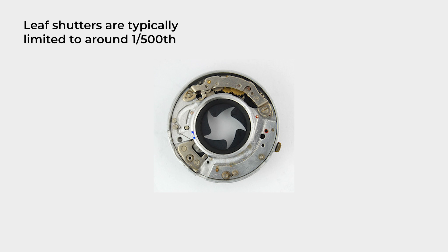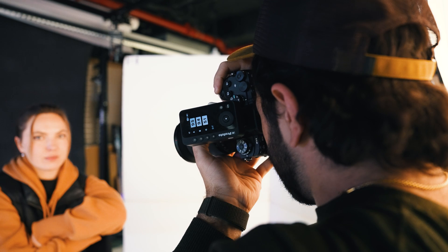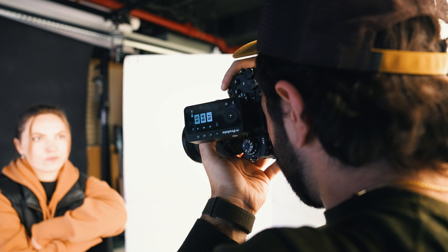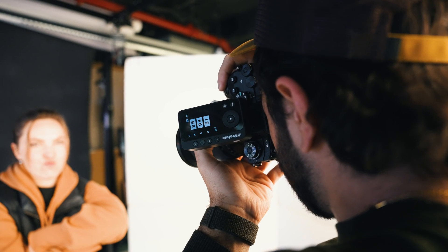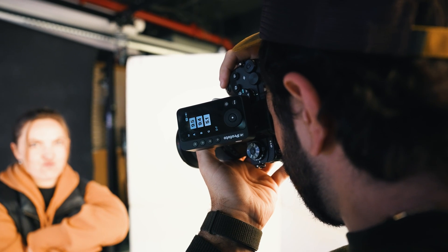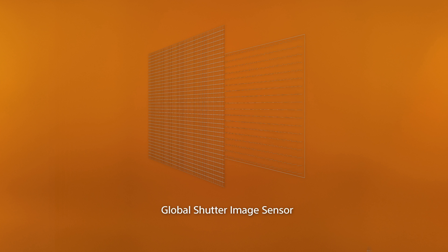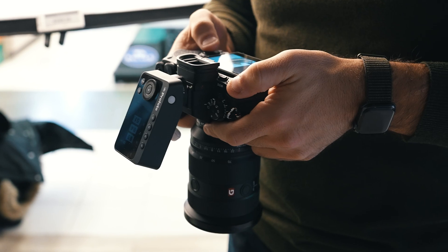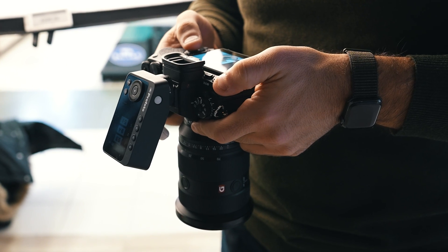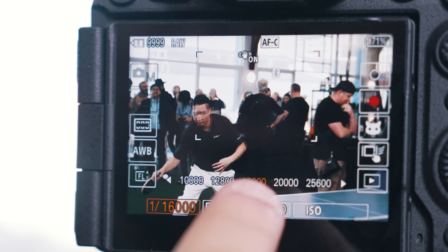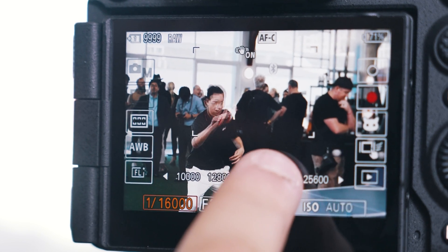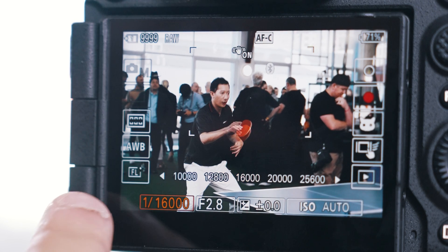But that all changes with global shutter. While you still need the flash to fire precisely with the shutter, you don't have to worry about varying exposures in a captured frame because the camera reads the entire sensor all at once rather than line by line. This is significantly faster and unlocks the ability to sync flash at any shutter speed — all the way down to 1/80,000th of a second with the A9 III.